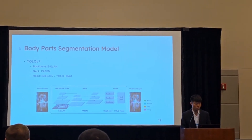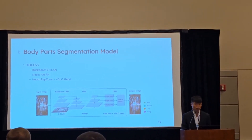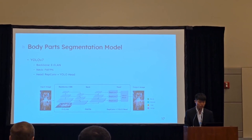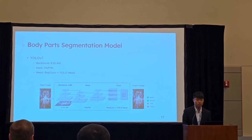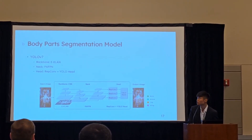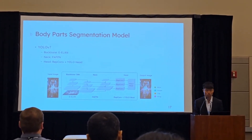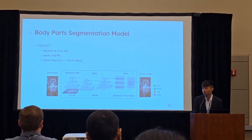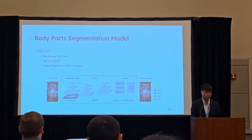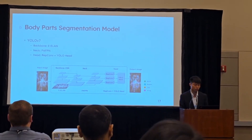For the body parts segmentation model, I use YOLOv7. The YOLOv7 architecture can be split into three parts: the backbone, neck, and head. The backbone uses ELAN as the feature extractor, and the neck uses PAN-FPN, which can use different scale results from the backbone to describe more detailed features. The head uses the re-parameterization trick and YOLO head, which can predict bounding boxes across 10 categories.